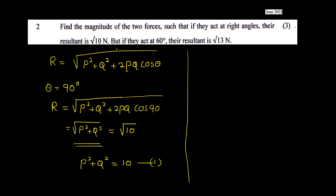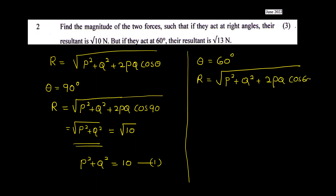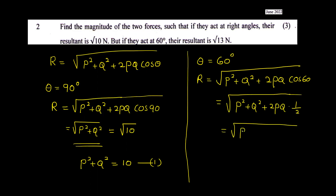In the second case, the forces act at 60 degrees, so theta equals 60 degrees. Now R = root of P squared plus Q squared plus 2PQ cos 60. The value of cos 60 is one half, so this becomes root of P squared plus Q squared plus PQ, which equals root 13.